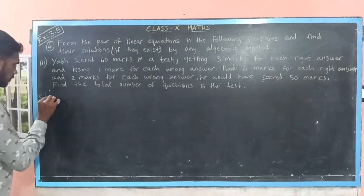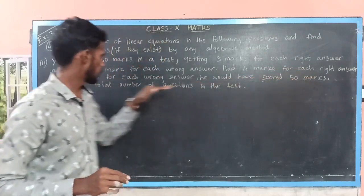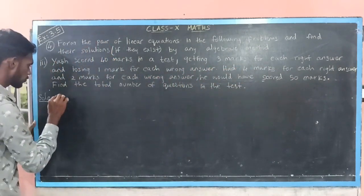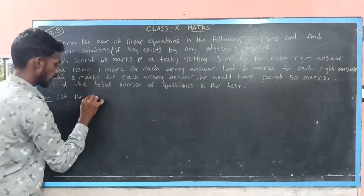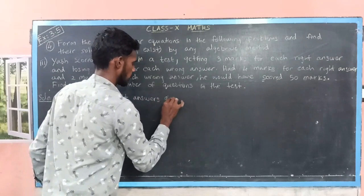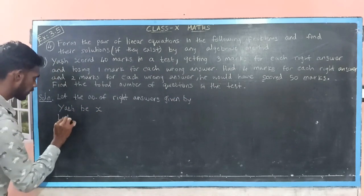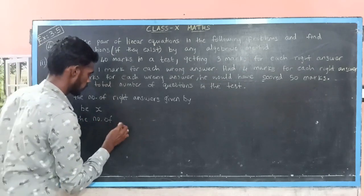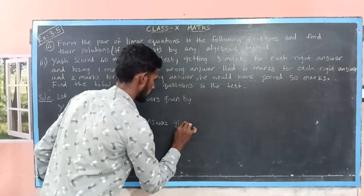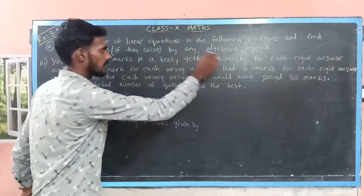Let us move to the solution. Since we have to find the number of questions asked in the test, the number of questions will be the number of right answers plus the number of wrong answers. We don't know exactly those values, so we assume: let the number of right answers given by Yash be x, and let the number of wrong answers given by Yash be y. Let me represent the given data in a tabular column.